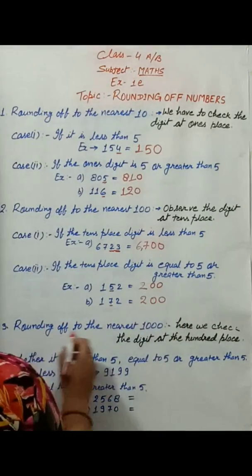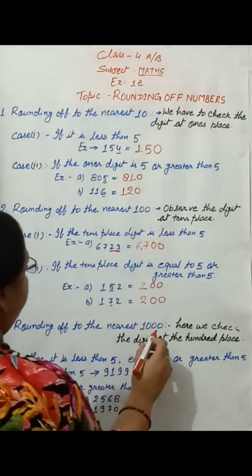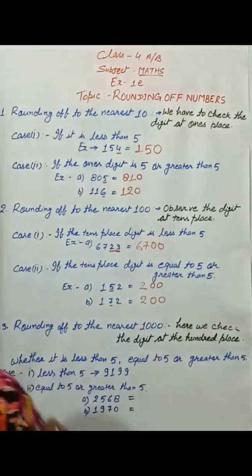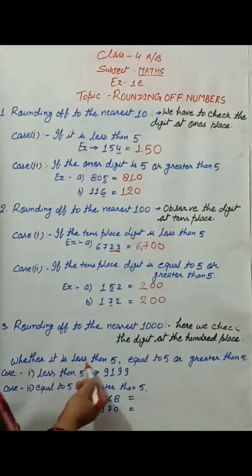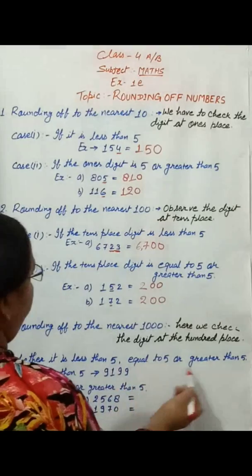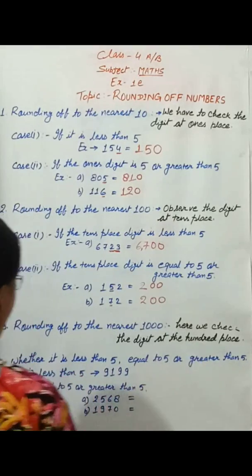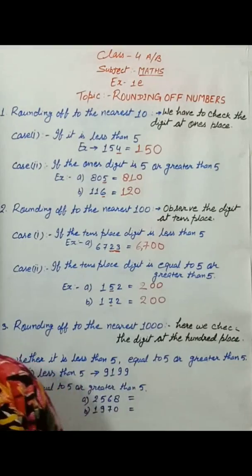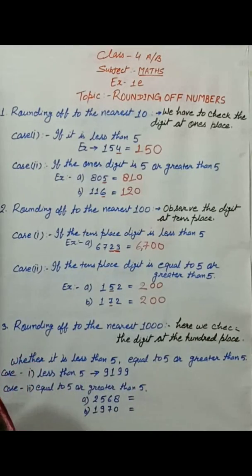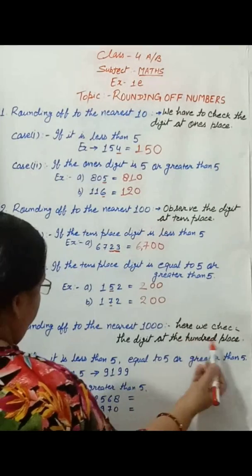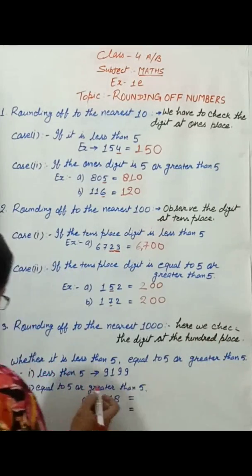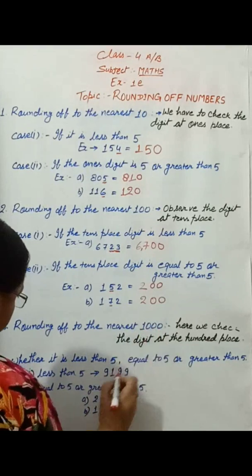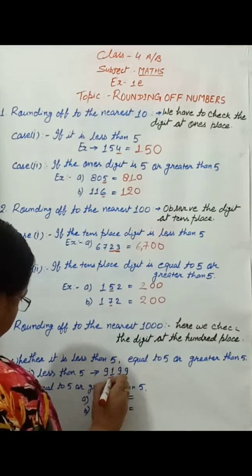In rounding off to the nearest thousand, here we check the digit at the hundreds place — whether it is less than five, equal to five, or greater than five. In case one, less than five, we observe the hundreds place digit. Here in taking round up, we observe the hundreds place digit.